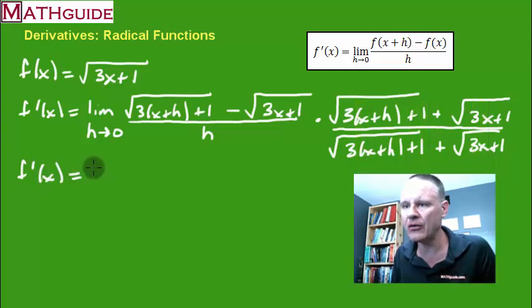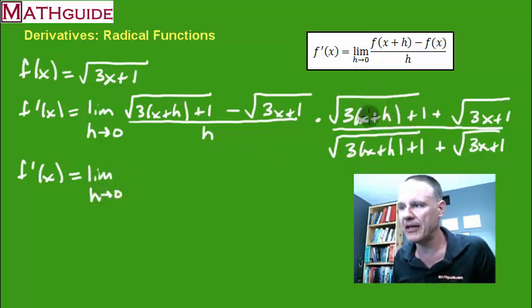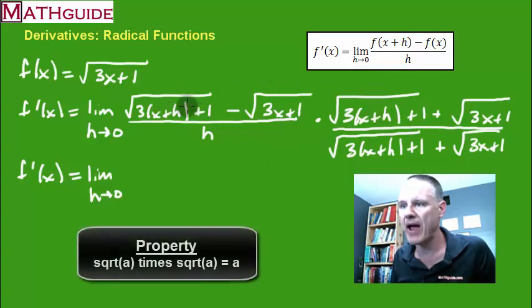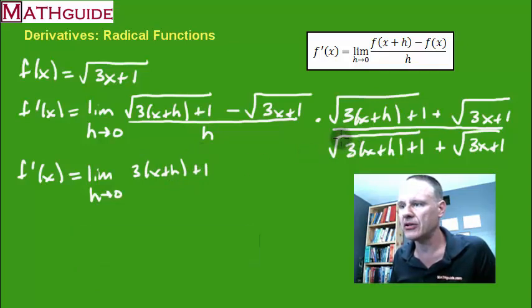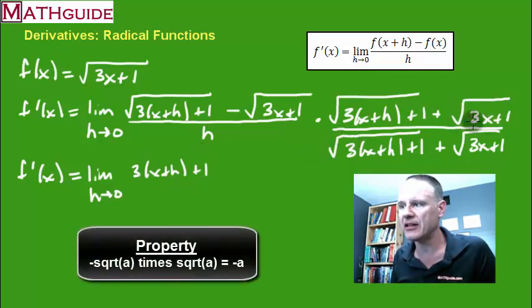Now, to understand what's going to come next, you do have to know a little bit of algebra. So what I'm going to do is multiply this term times this term, and of course the radicals will cancel, leaving just what's inside. You'll have the 3 quantity x plus h plus 1.